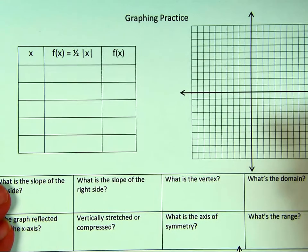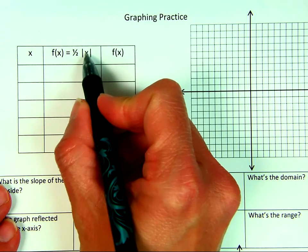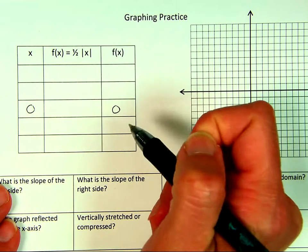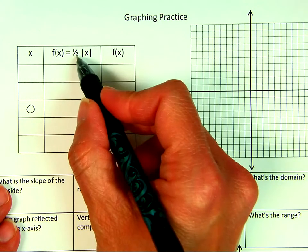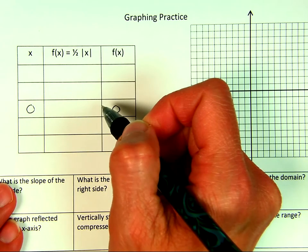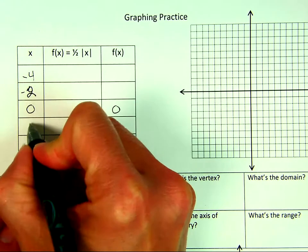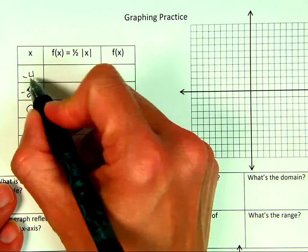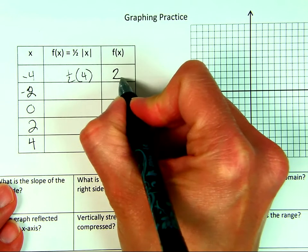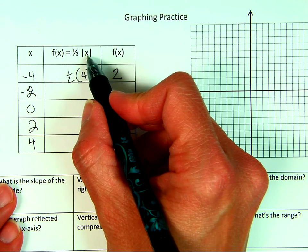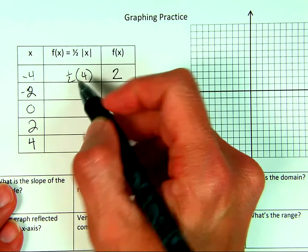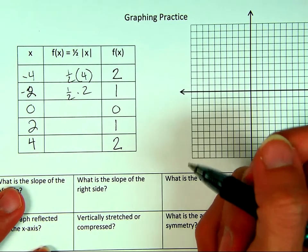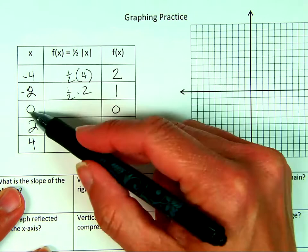The hard way: for y = ½|x|, the vertex is at (0, 0) because the absolute value of zero is zero, times one half is zero. When using a table with a one-half coefficient, I choose even numbers — negative four, negative two, two, four — so they're divisible by two. Plugging in: ½|−4| = 2, ½|−2| = 1, ½|2| = 1, ½|4| = 2. Then graph those points: (−4, 2), (−2, 1), (0, 0), (2, 1), (4, 2).